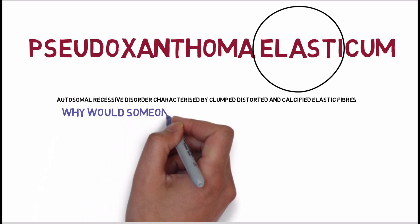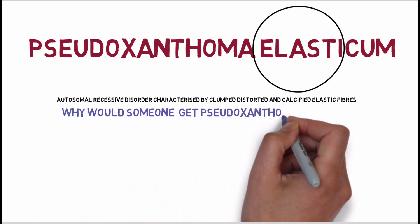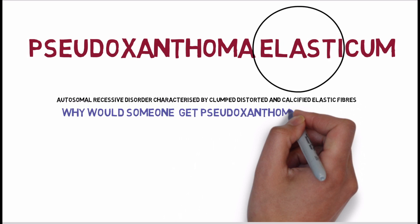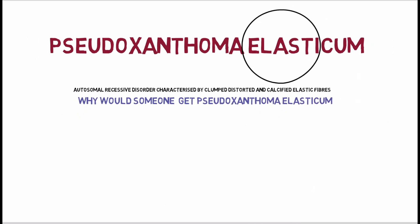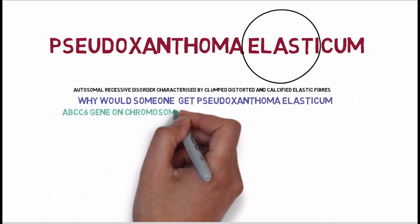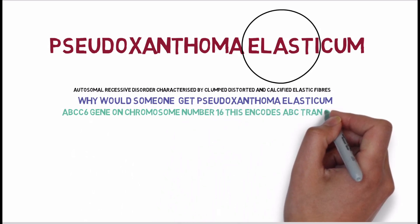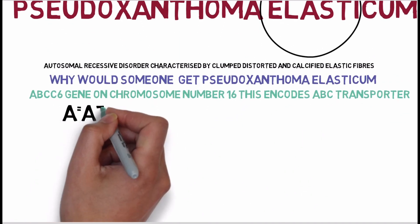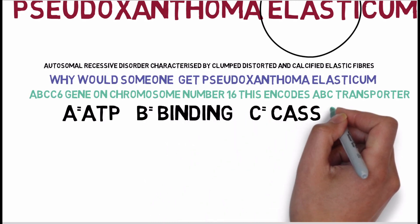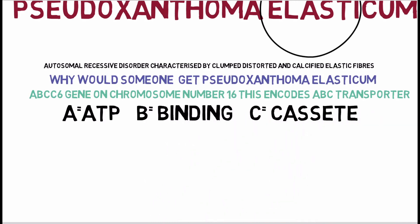Why would someone get pseudoxanthoma elasticum? Since it's an autosomal recessive disorder, there must be a mutation responsible. The mutation is in a gene called the ABCC6 gene, which encodes the ABC ATP-binding cassette transporter protein. As a result of this abnormal protein, abnormal mineralization occurs. Let's take a look at how this abnormal mineralization occurs.